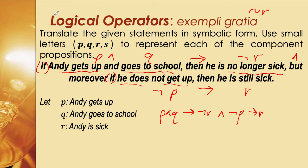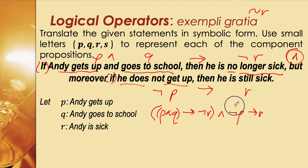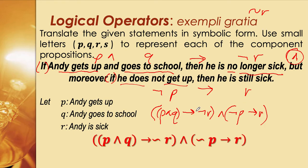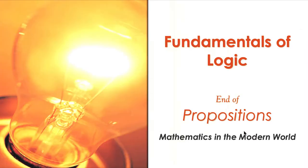'If Andy gets up and goes to school' is a single thought, so we put it in parentheses: (p ∧ q) → ¬r. The 'moreover' part signals a separate idea — ¬p → r. So our final answer is (p ∧ q → ¬r) ∧ (¬p → r). We can also use the tilde notation. This is the last part of our fundamentals of logic introduction concerning propositions.